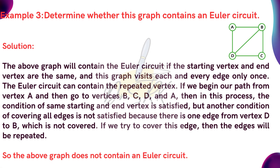Look at the example on the Euler circuit definition — example 4: determine whether this graph contains an Euler circuit. The above graph will contain an Euler circuit if the starting vertex and ending vertex are the same, and this graph visits each and every edge only once. That is the definition of Euler circuit. But the Euler circuit can contain repeated vertices.